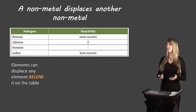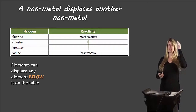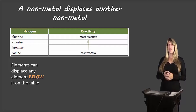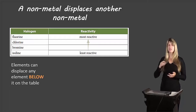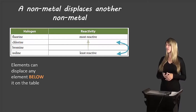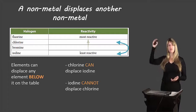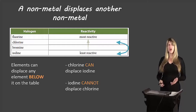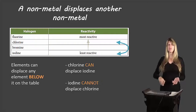Elements can displace elements below them on the halogen activity series table, and cannot displace anything above. Fluorine is at the top and can displace any element below it. Iodine is at the bottom and cannot displace any other halogen. Chlorine is in the middle — it cannot displace fluorine but can displace bromine and iodine. So chlorine can displace iodine because chlorine is above iodine, but iodine cannot displace chlorine because iodine is below.